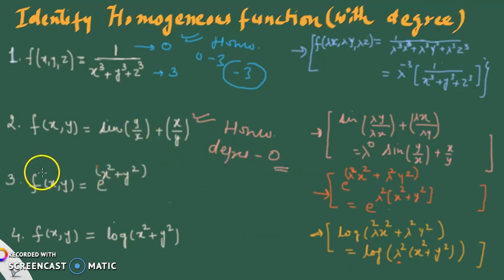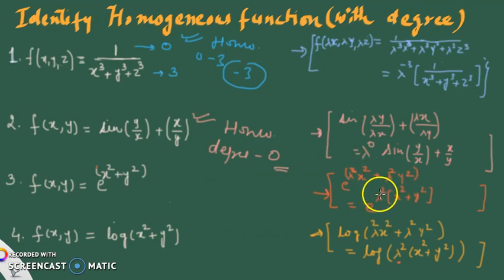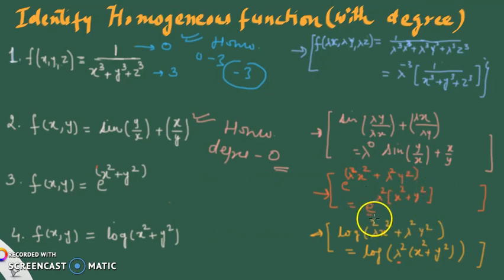The third example is f(x,y) = e^(x²+y²). Here, replacing x with λx gives λ²x² + λ²y² in the exponent, so we get e^(λ²(x²+y²)). But at this stage I am stuck, because I cannot take λ² out of the exponent and write it as λ² · e^(x²+y²) — that rule does not exist. Since I cannot get back the original function, this is not a homogeneous function.